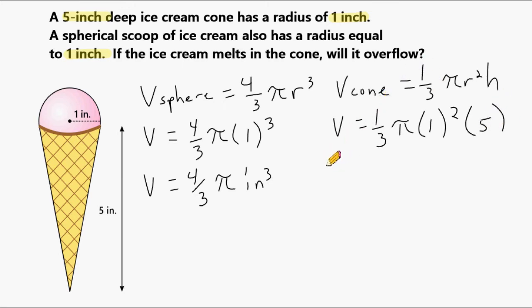Now what we're going to do is simplify this equation here. We have 1/3 times pi. And 1 squared is 1 of course. And 1 times 5 is 5. So we're going to multiply 5 times 1/3, and that's going to give us 5/3 pi.